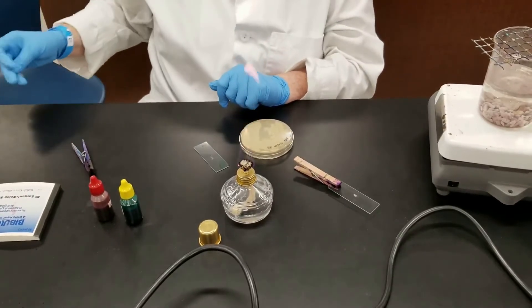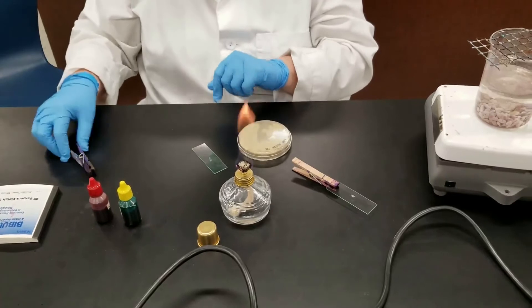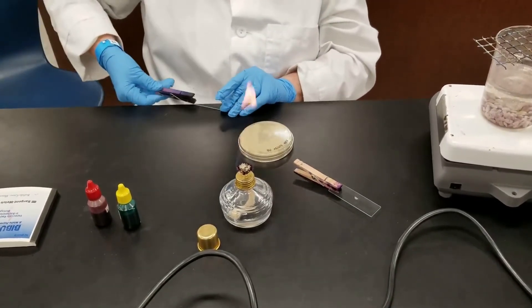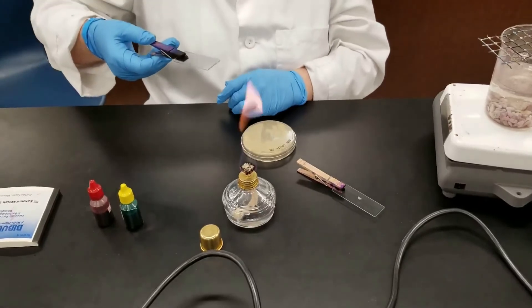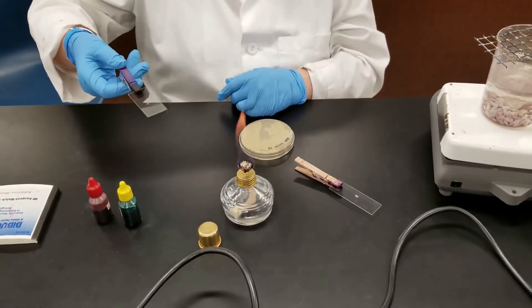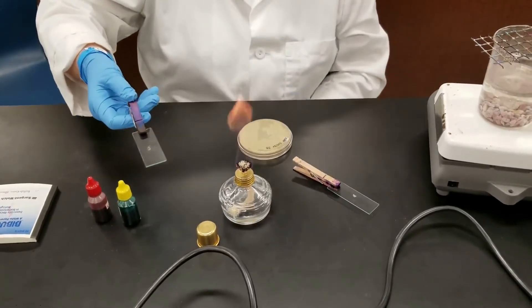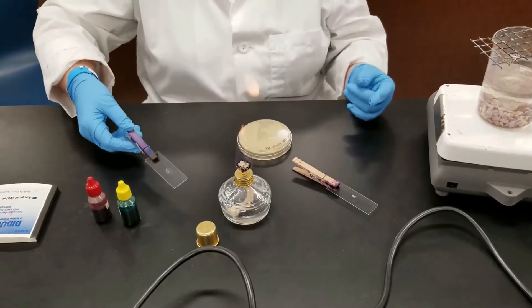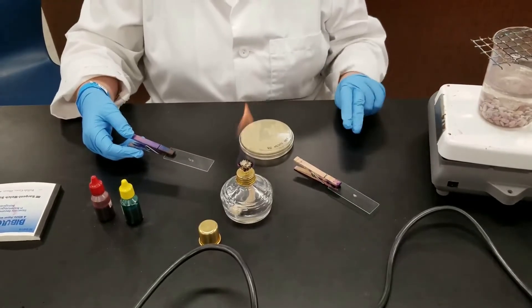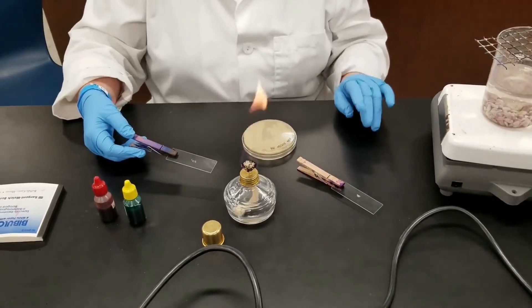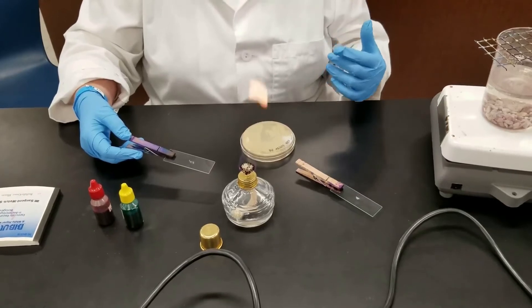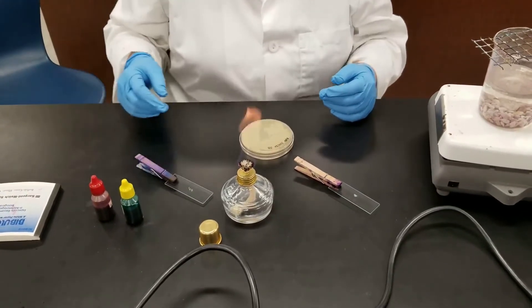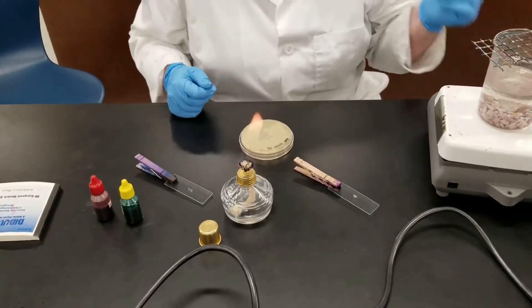I am done with the loop now, so I can handle the slide. I'm putting this clothespin on it. Now I'm going to heat fix it. That's where we just pass it through the flame a few times. That is going to kill the organism number one, it adheres it to the slide number two, and number three it's going to help the penetration of the stain.